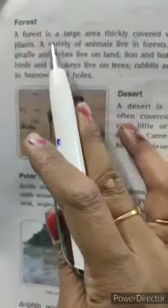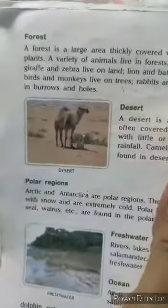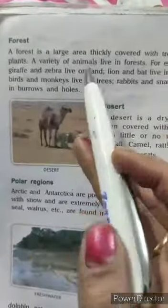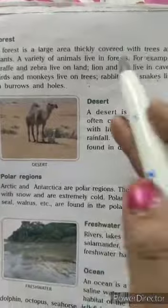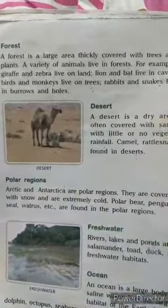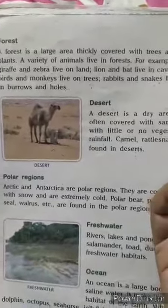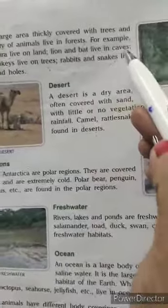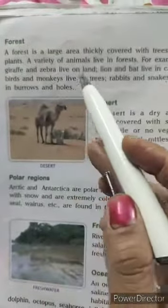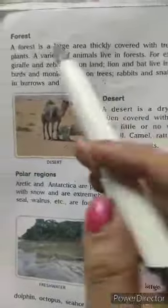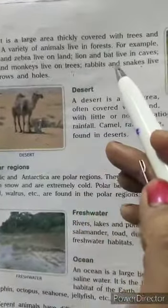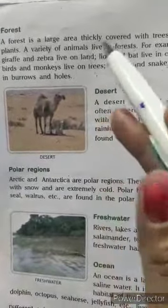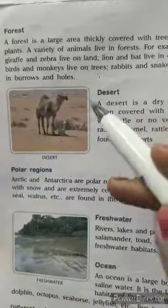The first natural habitat is the forest. A forest is a large area thickly covered with trees and plants. A variety of animals live in the forest. For example, giraffe and zebra live on land; lion and bat live in caves; birds and monkeys live on trees. In the forest, animals make their homes according to their choice and their need.